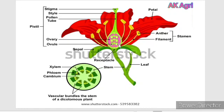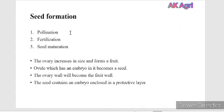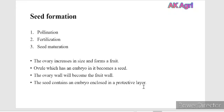Let us know how these seeds are going to form. There are three steps involved in seed formation. The first step is pollination, the second is fertilization, and the third one is seed formation. After pollination and fertilization, the ovary will increase in size and it forms a fruit, whereas the ovule that has an embryo in it becomes a seed. The ovary will become the fruit wall, and the seed contains an embryo which is enclosed in a protective layer called as seed coat.